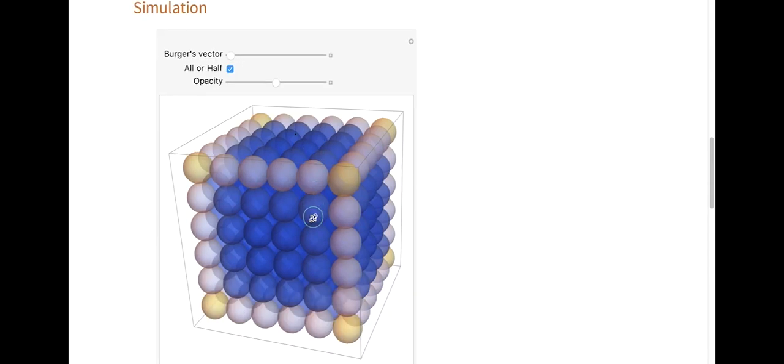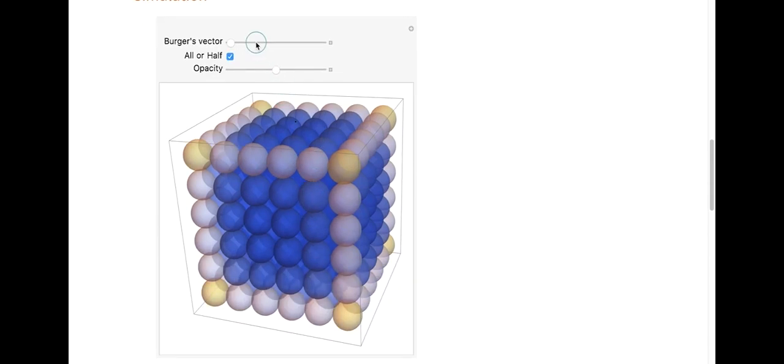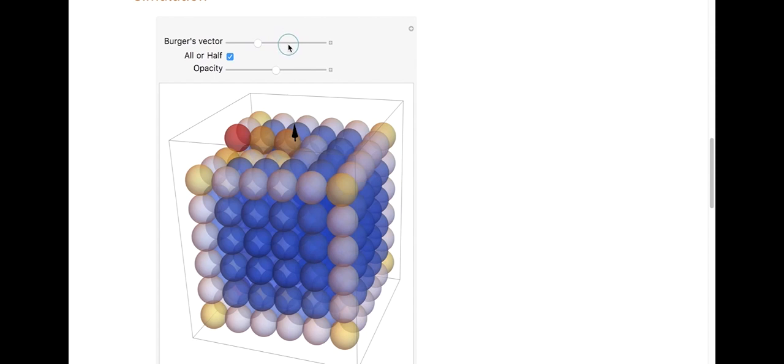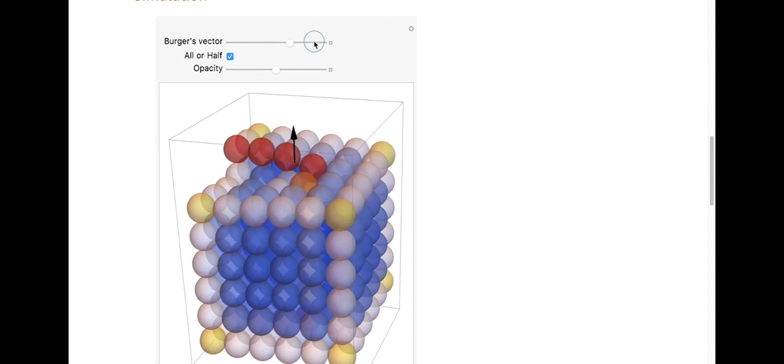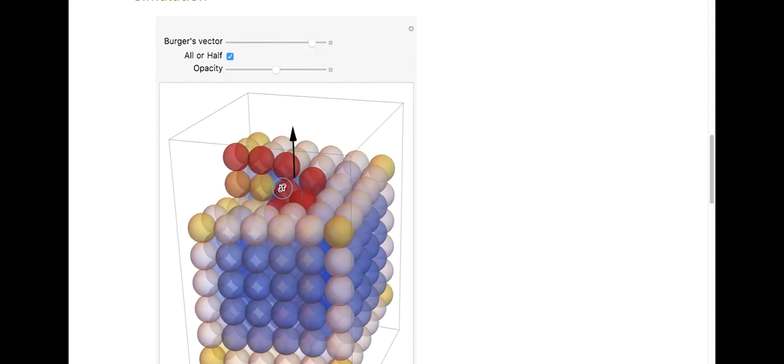Now I'm going to extend this layer to show all the inner atoms of my cubic lattice. As I increase the magnitude of the Burgers vector here, you can see how the atoms right around the dislocation become more red or higher energy. So the energy around the dislocation is higher, very similar to what we saw with the vacancies.